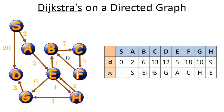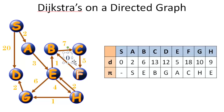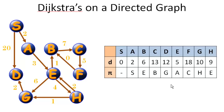Our last vertex to visit is vertex F, currently at a distance of eighteen. F has one outbound edge with a weight of zero going to B. That won't help us on B since we already have a distance of six and F has a distance of eighteen — it does not give us a shorter path to B. We mark this edge and vertex F as complete. Now we're finished — we've applied Dijkstra's algorithm on a directed graph to find the shortest distance to each vertex from the source. If you enjoyed this video, please give me the thumbs up and click subscribe. I'm Joe James, thanks for watching.